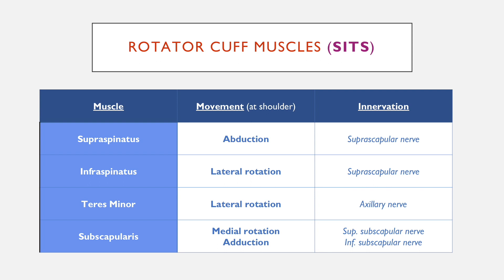In terms of the nerves, supraspinatus and infraspinatus both go along the spine of the scapula and are both innervated by the suprascapular nerve. Teres minor is innervated by the axillary nerve. Subscapularis is innervated by two nerves, and we'll come on to nerves next week in more detail and go over this again.